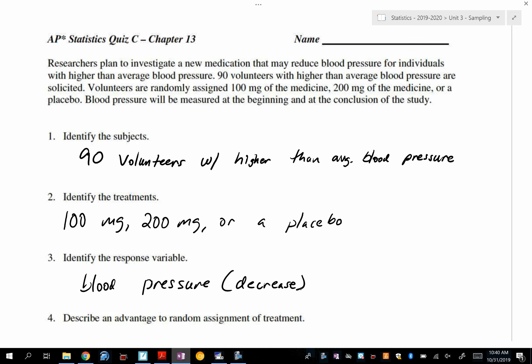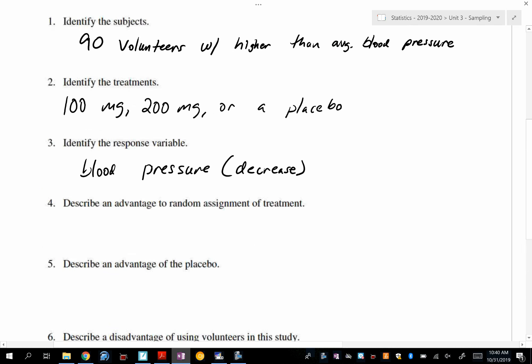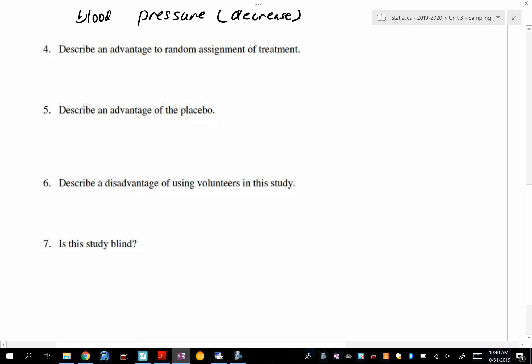Let's talk about number four. What would be an advantage to randomly assigning these treatments? We have 90 volunteers and three different treatments, so we should randomly assign 30 to be in each group. It's as easy as writing down some kind of number or name associated with these people, putting into a big tub, mixing it up, pulling out their names one at a time.